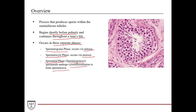Here's a cross section of a seminiferous tubule. You've seen this slide before — you have the spermatogonia down here in the basal compartment, and then spermatogenesis occurs all the way towards the lumen, and then you have the final mature sperm resting within the lumen.